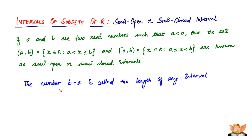Also, the number B minus A is called the length of any interval, be it open, closed, semi-open, or semi-closed. That ends the total topic of intervals of subsets of R. I'll see you in the next videos with more concepts and problems based on sets.